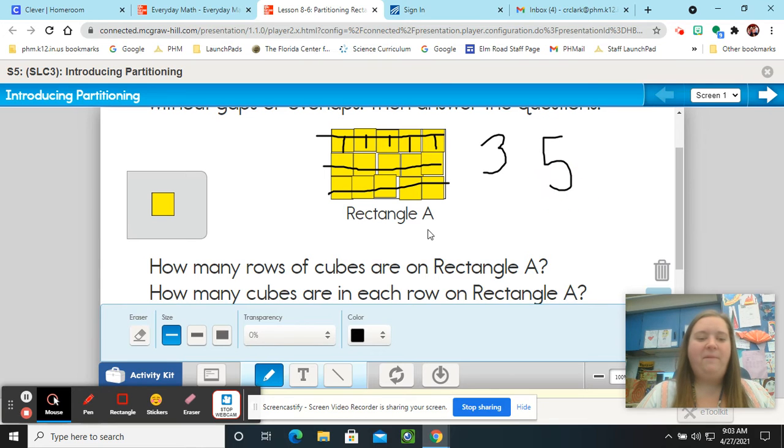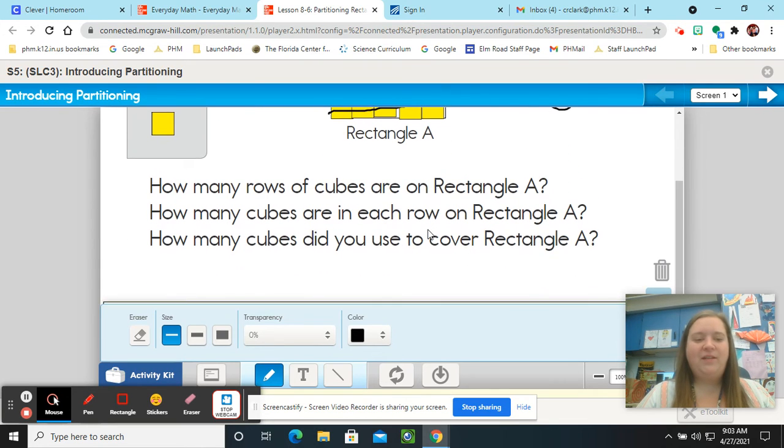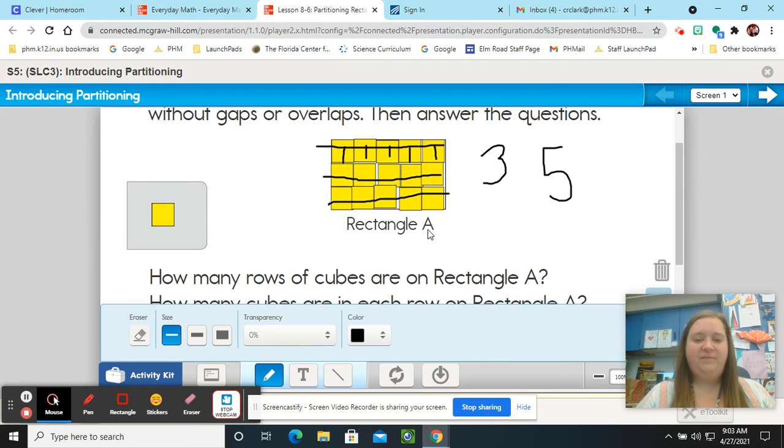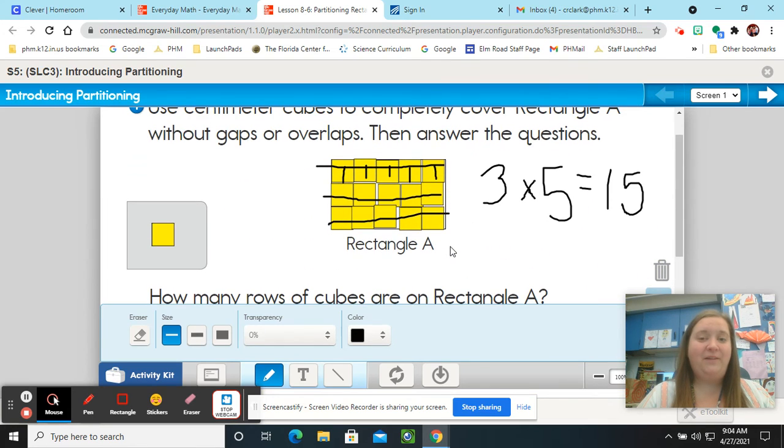So I want to remember that. And then our next question. How many cubes did you use to cover rectangle A? How many cubes in all? So I know that there are 5 in each row and I know there are 3 rows. So I can multiply and count by 5s 3 times. And if I do that, I get how many cubes? If you said 15, you are correct. So there should be 15 cubes in all.